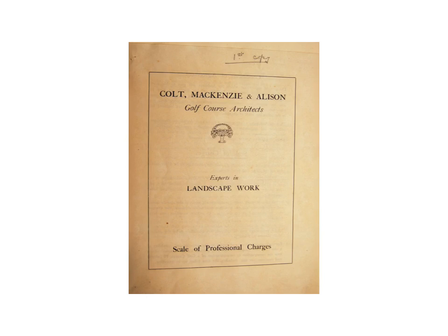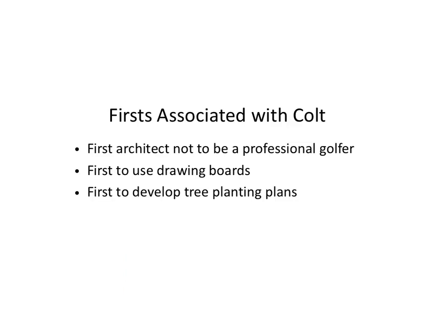Harry Colt trained a number of golf course architects who would become widely known. C.H. Allison served as a partner for Colt for over 20 years, while Alistair MacKenzie got his start with Colt. Among Colt's firsts were being the first architect who was not a professional golfer, using drawing boards, and preparing tree-planting plans for his golf courses.